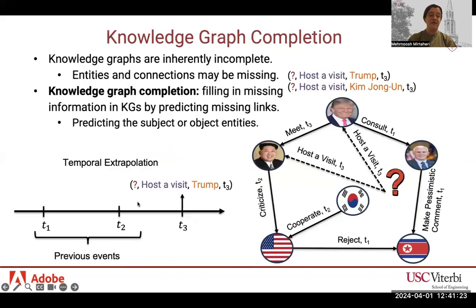Knowledge Graphs are valuable in a range of applications. However, they tend to be noisy and incomplete. Knowledge Graph Completion aims to fill in these gaps by predicting missing links between entities. In this example, we want to predict which country will host the visit between Trump and Kim Jong-un.